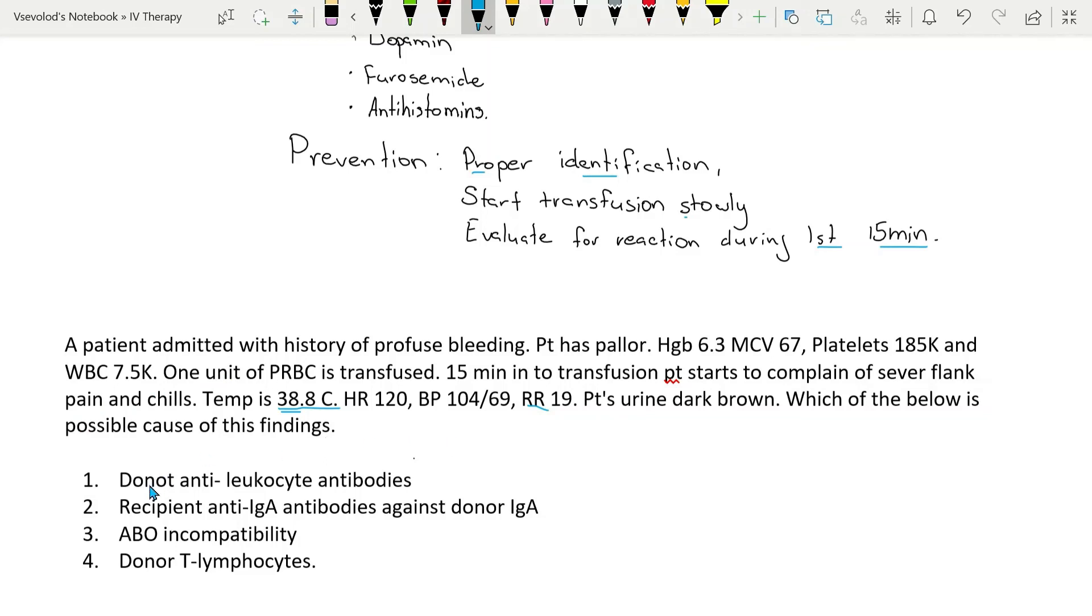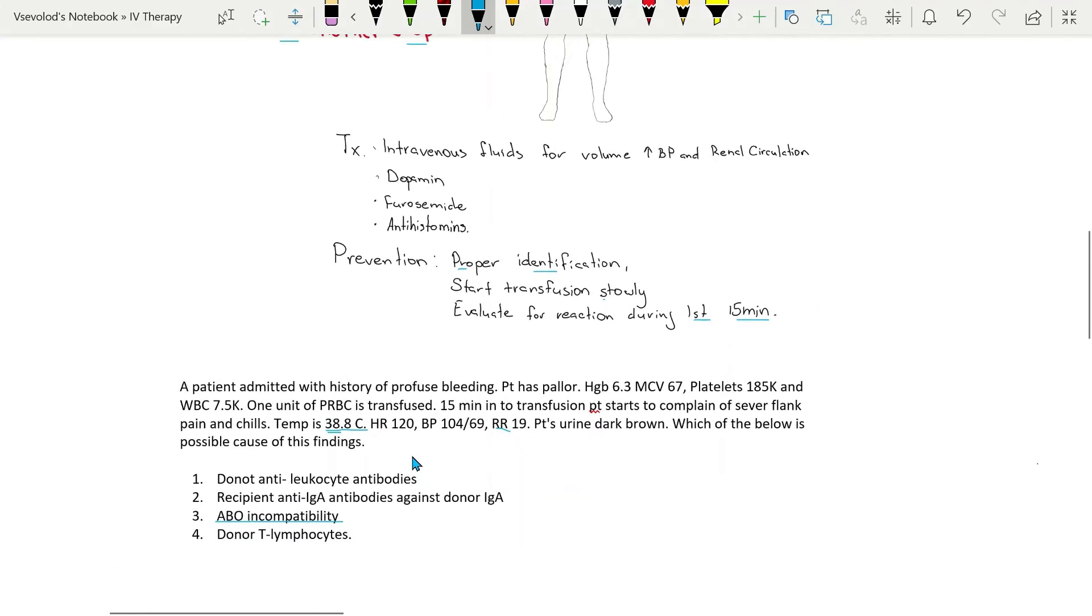Is it number 1: donor anti-leukocyte antibodies are the cause. Number 2: recipient's anti-immunoglobulin A antibodies against donor immunoglobulin A. Number 3: is it ABO incompatibility? Or number 4: is it donor T lymphocytes that are causing all these problems? Since we're talking about acute hemolytic reaction and its incompatibility of the donor's red blood cells with the recipient's plasma, the answer is number 3, ABO incompatibility.